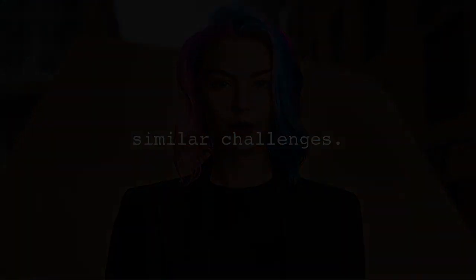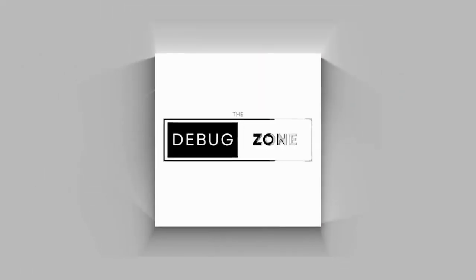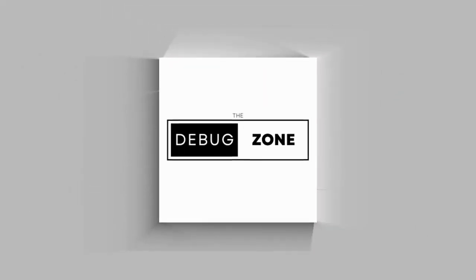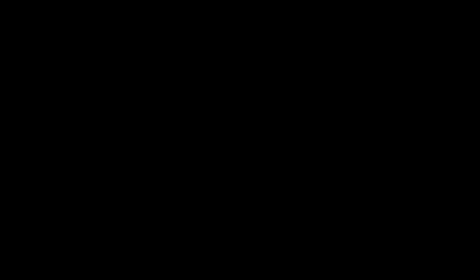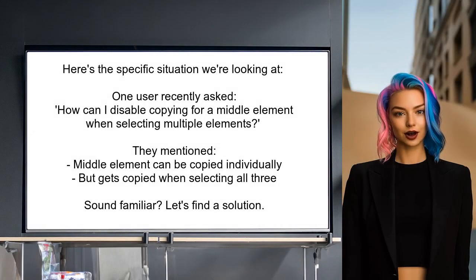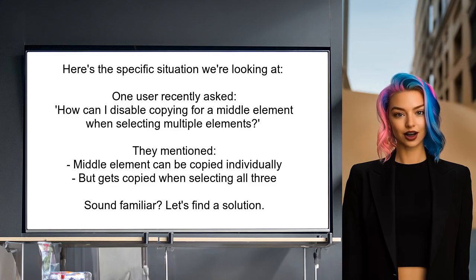Many developers face similar challenges. Here's the specific situation we're looking at. One user recently asked: how can I disable copying for a middle element when selecting multiple elements? They mentioned that while they can disable copying for that middle element individually, it still gets copied when selecting all three elements together. Sound familiar? Let's dive into this and find a solution.